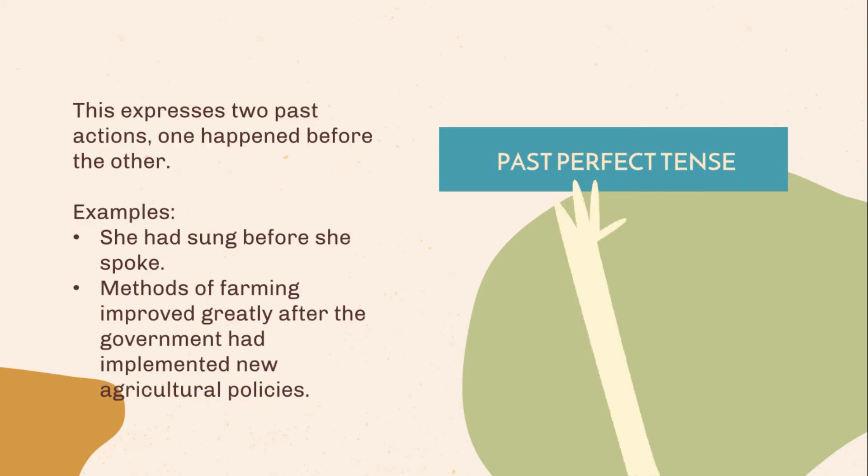Past perfect tense. This expresses two past actions — one happened before the other. Examples: She had sung before she spoke. Methods of farming improved greatly after the government had implemented new agricultural policies.